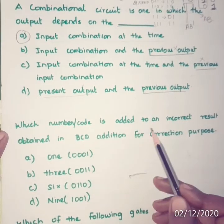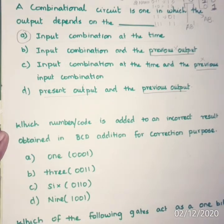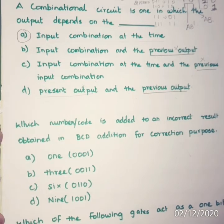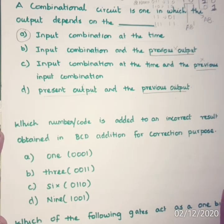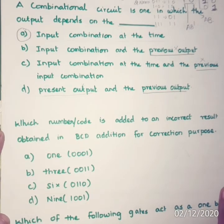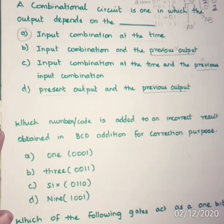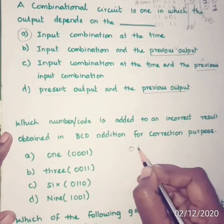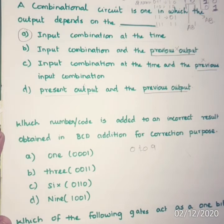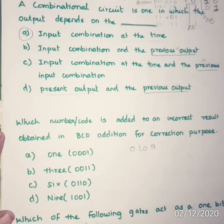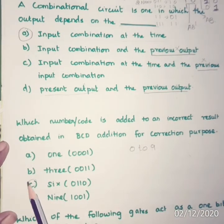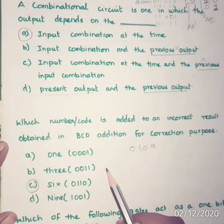Next question: which number or code is added to an incorrect result obtained in BCD addition for correction purposes? BCD stands for binary coded decimal, in which each decimal digit is represented by 4-bit binary. Using 4 bits you can represent values from 0 to 9. The correct answer is: you have to add 6 to the incorrect answer to get the correct BCD result.